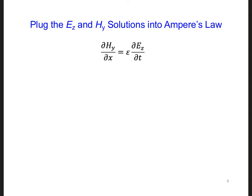Plugging in the solutions for EZ and HY and taking the time and spatial partial derivatives, after simplifying, we're going to get HY0 is equal to minus omega epsilon over K times EZ0.